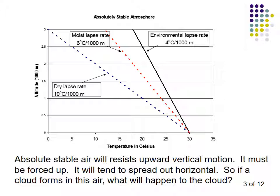If the environmental lapse rate is less than the moist adiabatic lapse rate, we have what's called an absolutely stable atmosphere. If you force an air parcel up into an absolutely stable atmosphere, it will tend to spread out horizontally. So if a cloud forms in this air, what do you think would happen to the cloud? It would spread out.